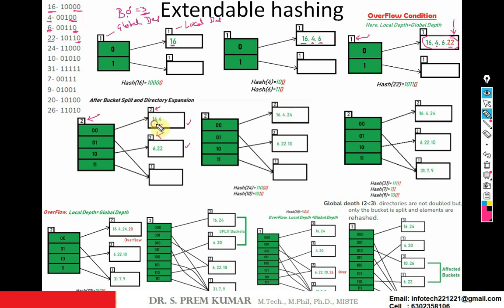For 6, the last two significant bits are 10, so 6 is moved to the 10 bucket. For 22, the last two significant bits are also 10, so 22 is placed in the 10 bucket. The other bucket with entries having least significant bit 1 is unchanged and is pointed to by both 01 and 11 since the last bit is 1.